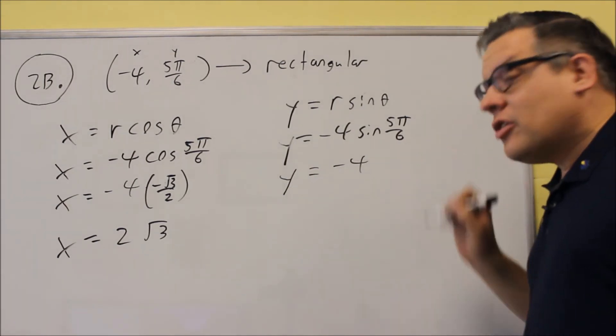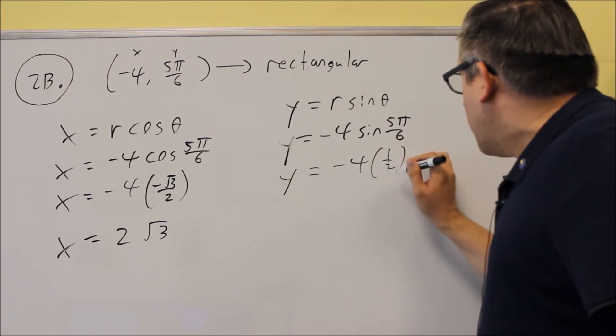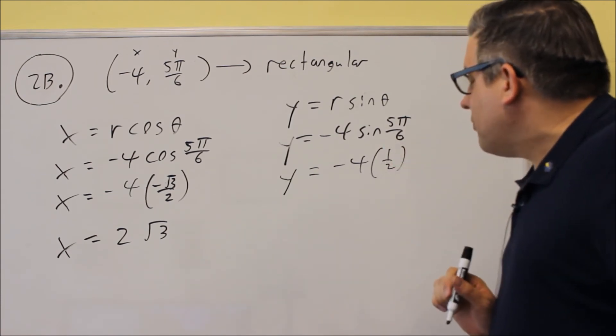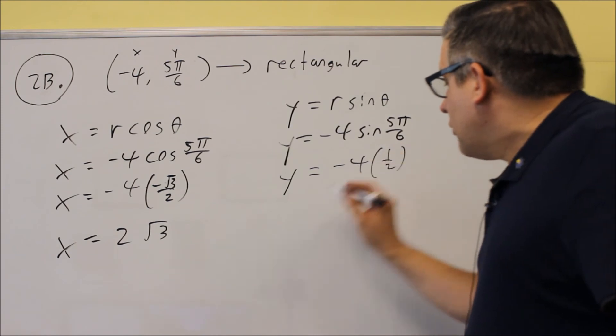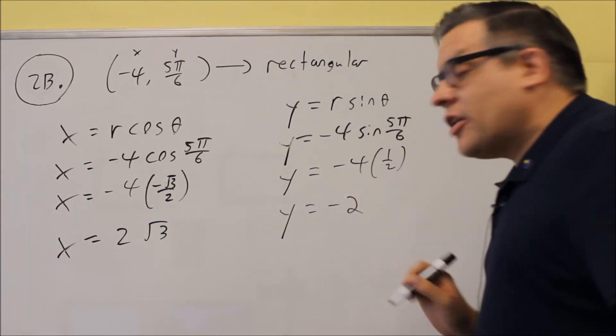And when you look at the unit circle, the y value at 5 pi over 6 is going to be 1 half. That would be positive. And so when you multiply that out, you get negative 2.